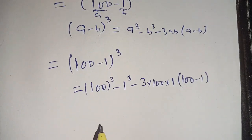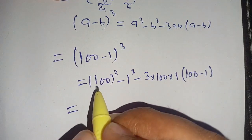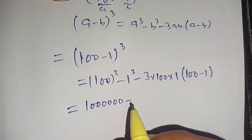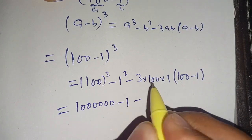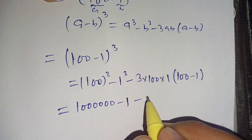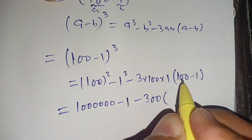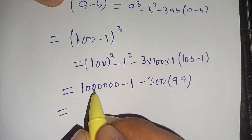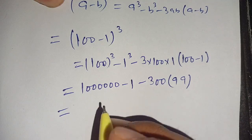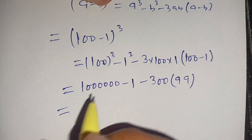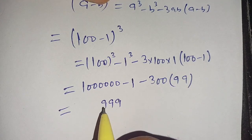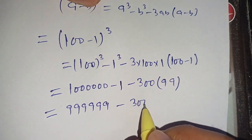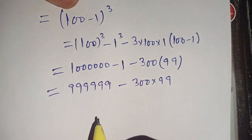Now, 100 cube equals 1,000,000. Minus 1 cube equals 1. So we have 1,000,000 minus 1, which gives 999,999. Then minus 3 times 100 times 1, which becomes 300 times (100 minus 1), that is 300 times 99.